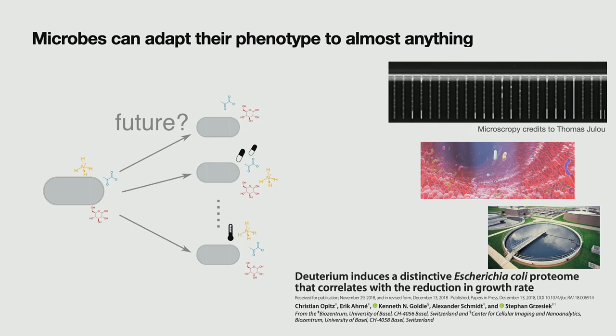But what's even more striking is that if you give them something that they've clearly never seen before, even to that they can adapt. So this is a study where they took the growth medium and took all the hydrogen atoms from the water and replaced it by deuterium. And E. coli just completely reshapes its proteome. Everything changes and still they can then grow again.